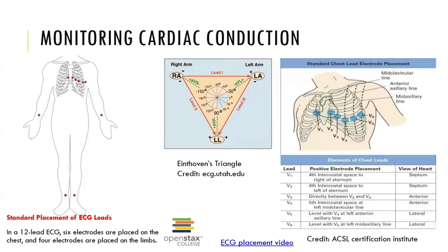How do we monitor cardiac conduction? We use what's called an electrocardiogram, also known as an ECG or EKG. The appearance of the EKG will vary with the placement of the monitoring electrodes, also called leads. There are distinct waves produced during a typical EKG: the P wave, the QRS complex, and the T wave.